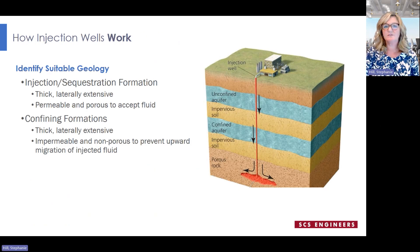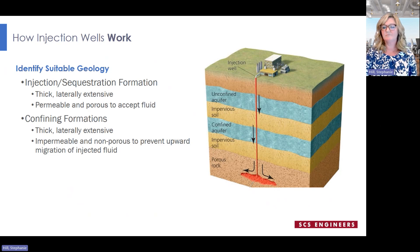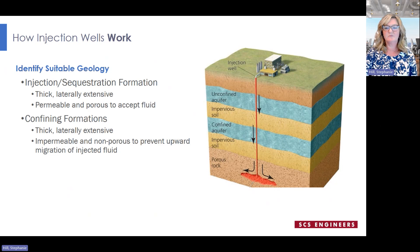Injection wells are designed to protect underground sources of drinking water — that's any aquifer where the total dissolved solids measures 10,000 milligrams per liter or less. To protect groundwater, we have to make sure that any fluid injected stays there and doesn't come back up. We need to identify whether suitable geologic conditions exist at a facility to provide an injection interval and a confining unit. Is there a rock formation that's thick, laterally extensive, and has sufficient capacity to accept the injected fluid? That's our injection interval. Is there also a rock formation that's thick and laterally extensive but prevents the injected fluids from migrating upward toward the protected drinking water aquifers? That's our confining unit.